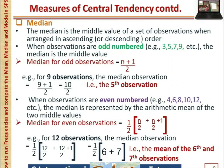The median is the middle value of a set of observations when arranged in ascending or descending order. When observations are odd-numbered, the median is the middle value — so for nine observations, the median is the fifth observation. When observations are even-numbered, the median is the arithmetic mean of the two middle values — so for 12 observations, the median is the mean of the sixth and seventh observations.